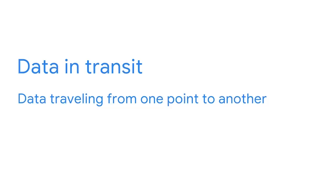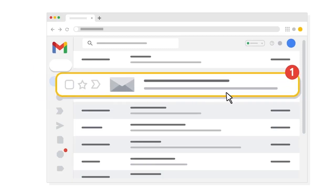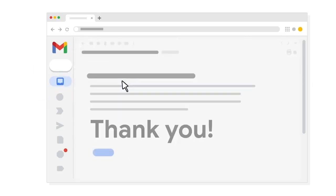Next is data in transit — data traveling from one point to another. While you're signed into your account, a message from one of your friends appears. They sent you an interesting article about the growing security industry. You decide to reply, thanking them for sending it to you. When you click send, this is now an example of data in transit.